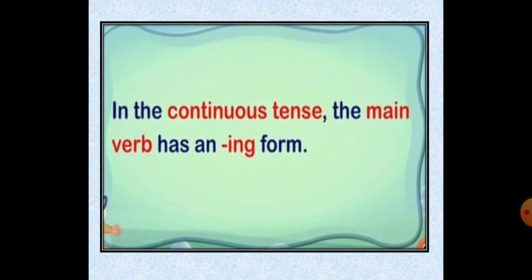In the continuous tense, the main verb has an ing form. For example: play — playing, cry — crying, slip — slipping, jump — jumping, eat — eating. Continuous tense mein compulsory ing verb ka jo form hai, wohi rakhna hai.